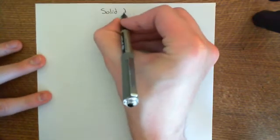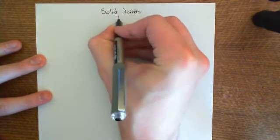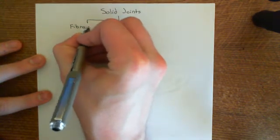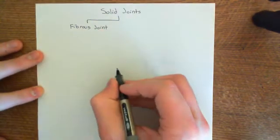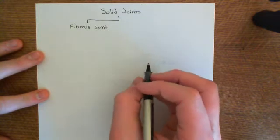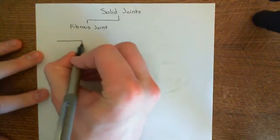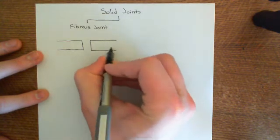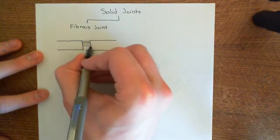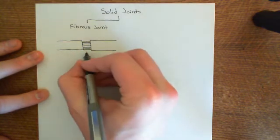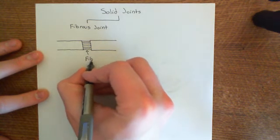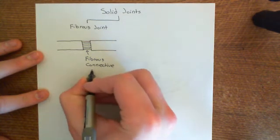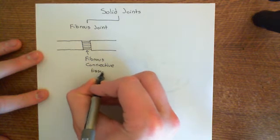In fibrous joints, you do not have an articular cavity full of synovial fluid sitting between the two bones. Instead, between the two bones you have lots of very dense connective tissue — fibrous connective tissue that connects the two ends of the bones. This is why it's called a fibrous joint: you've got fibrous connective tissue between the two ends of the bones.